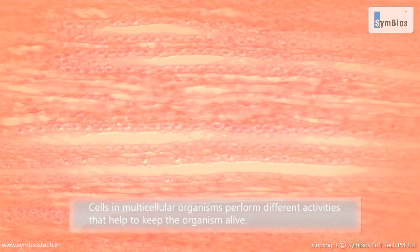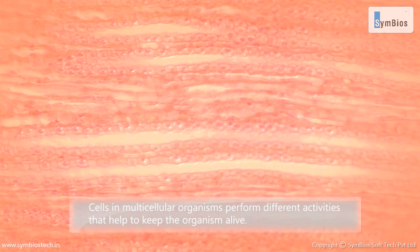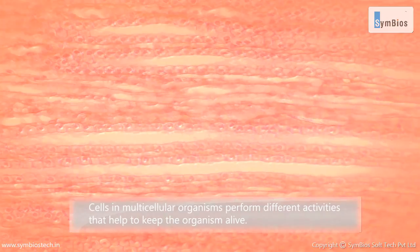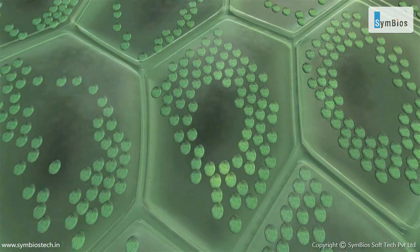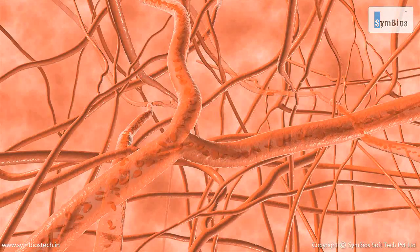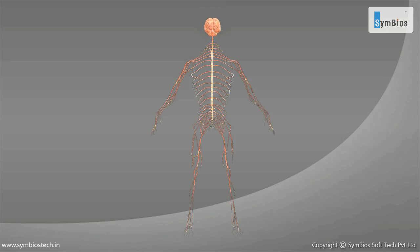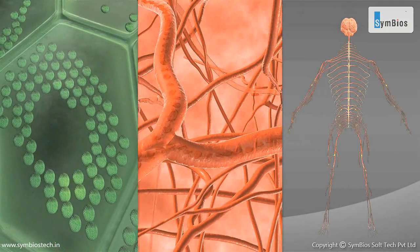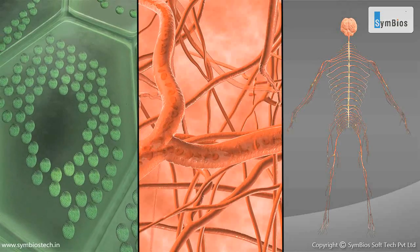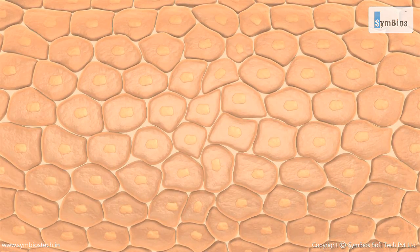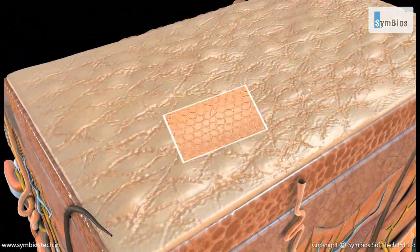Now we move on to the tissue level of organization. Cells in multicellular organisms perform different activities that help to keep the organism alive — like cells in green leaves which make food for the plant, red blood cells in humans and other animals that carry oxygen, and nerve cells that carry messages to and from the brain. These cells perform a specialized function and are called specialized cells. A group of specialized cells that perform a specialized function are called tissues.